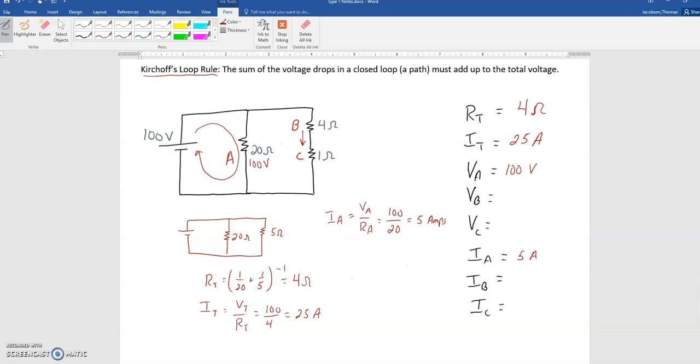What I notice right away is that I actually can get the current of B and C without much work here at all. I do know that I get a total current of 25 amps. And if 25 amps comes out of the battery,